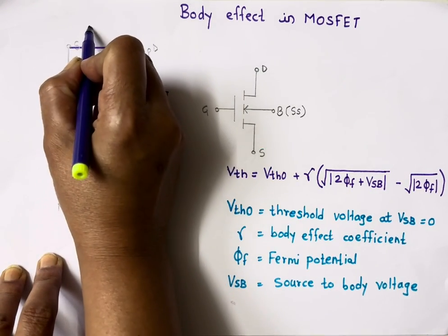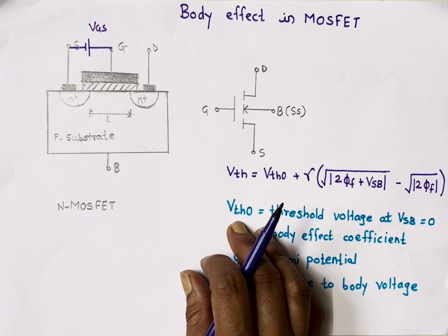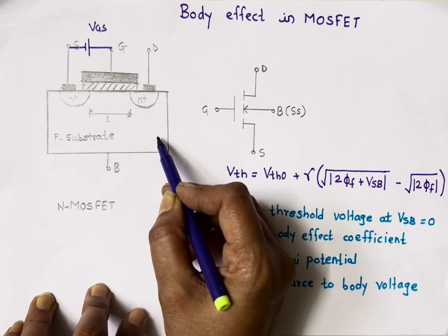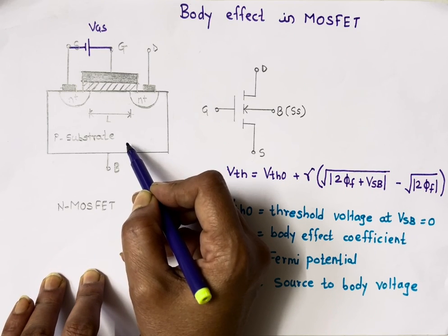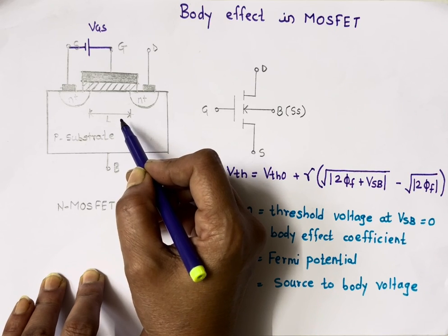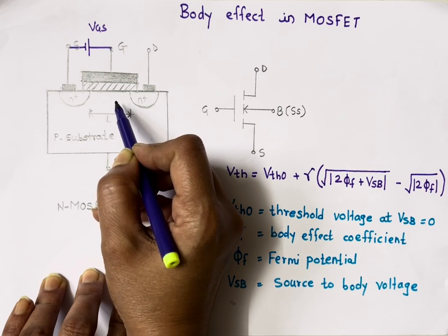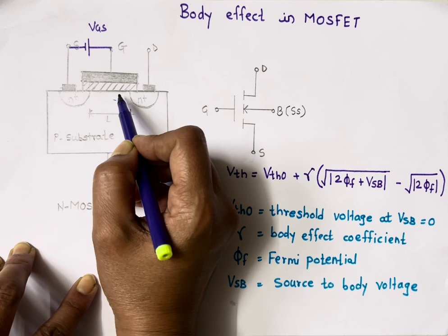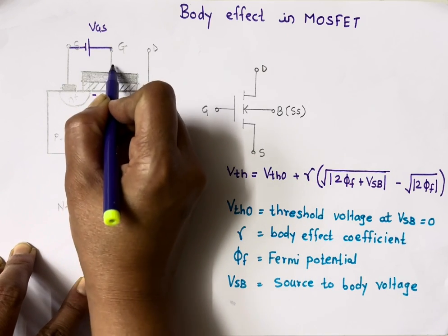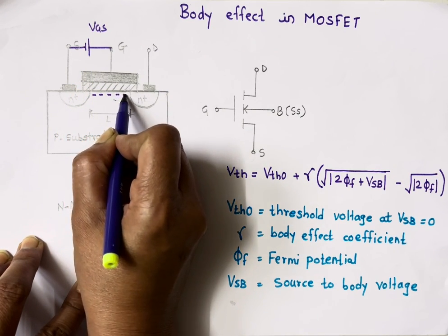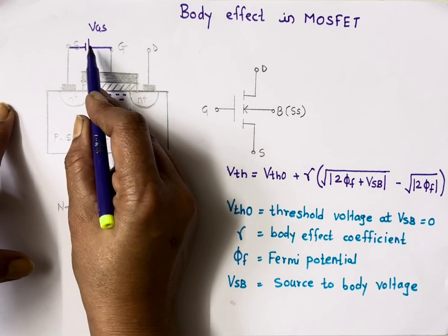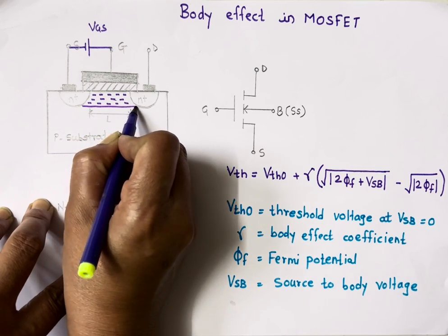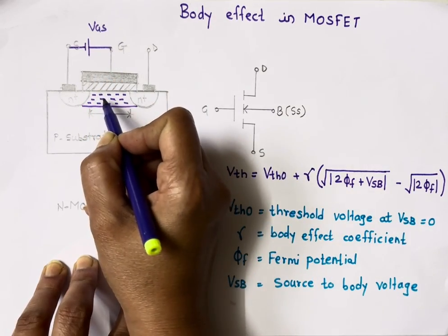The very first job in a MOSFET is the creation of a channel. To create a channel, we must apply some voltage between gate and source, called VGS. Because the gate is at a positive potential, it will attract minority charge carriers — electrons — present in this P-substrate. A thin layer of those electrons accumulates just below the oxide (SiO2) layer, and this thin layer is called the inversion layer. As VGS increases, it attracts more and more electrons and the width of this channel increases.